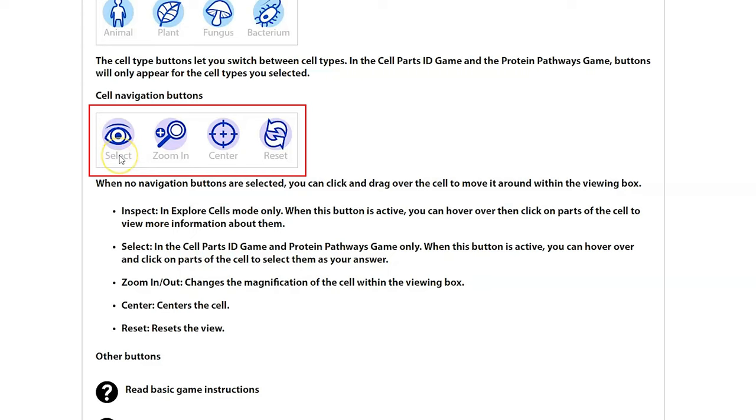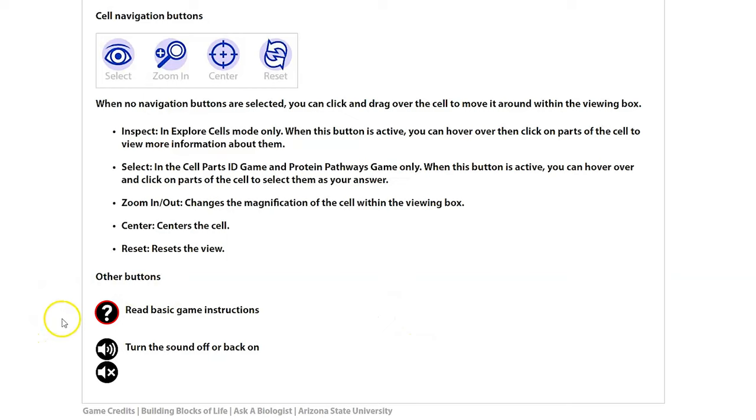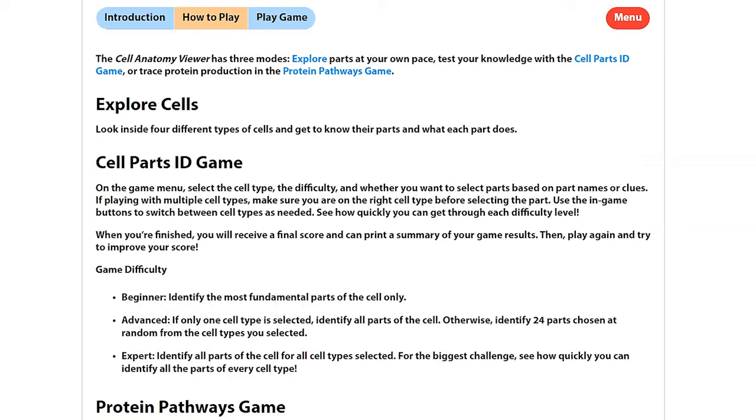Once you're playing, remember that you can select the cell type. You can zoom in because you might see that there are some cells that you want to see a little bit more detail. You can re-center the view of the cell, and then of course you can reset everything. There's the question mark that lets you get basic instructions on the particular page you're on, and you can turn the sounds on and off. Let's go play the game.